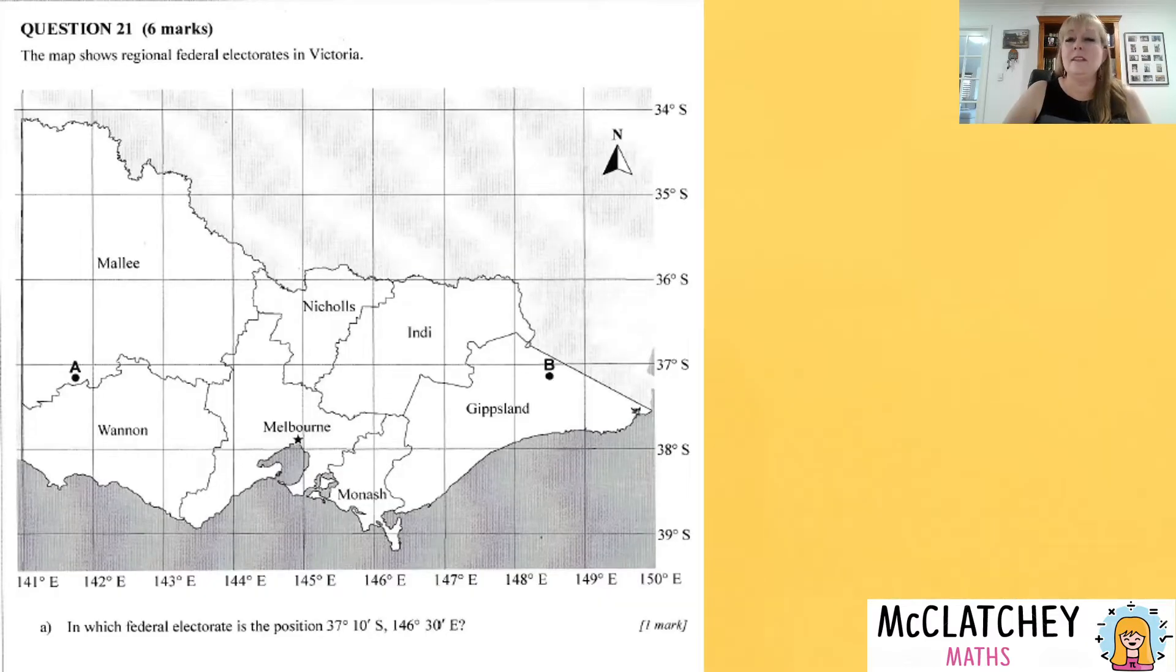Okay. So question 21, similar sort of thing here, but this time we're given a map of some federal electorates in Victoria. And we're asked which federal electorate is the position 37 degrees and 10 minutes south. That's what that dash means, minutes. So it's a good idea to have your calculator handy for that one, but we can actually do it without a calculator. I'm going to show you how in a moment. And then we've got the other position, 146 degrees, 30 minutes east. So that's our other coordinates for longitude.